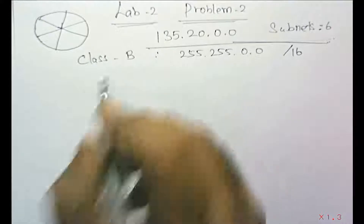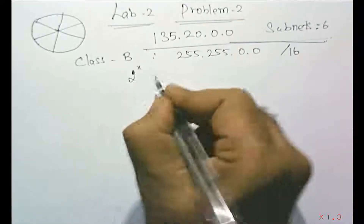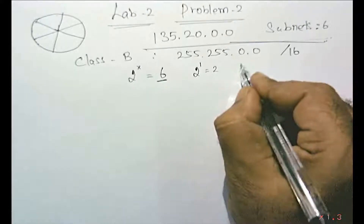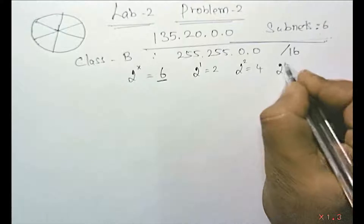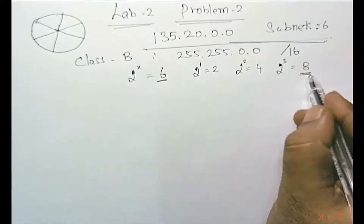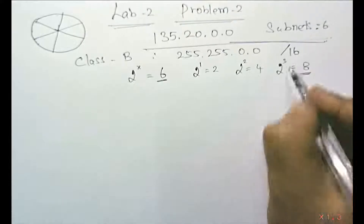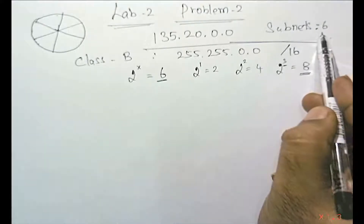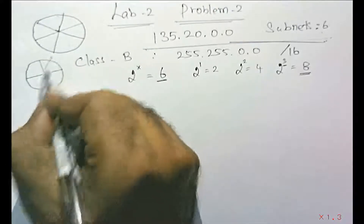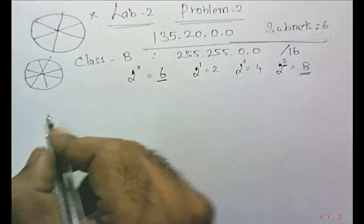The number of subnets needed is 6, so we have to fix the number of bits to be borrowed. We need 2 to the power of something to be greater than or equal to 6. 2^1 = 2, 2^2 = 4, 2^3 = 8. You cannot have exactly 6 subnets, but if you borrow 3 bits you can have 8 subnets. So you have to go for 3 bits — there is no option to divide exactly into 6, only into 8.